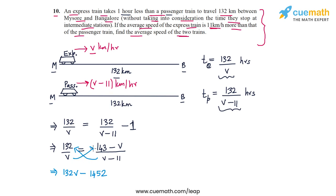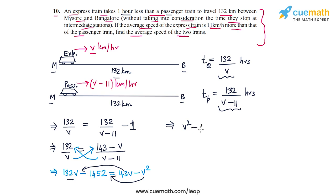Cross-multiplying v with (143 minus v) gives 143v minus v². Rearranging the terms, bringing minus v² to the left gives v², and combining 132v minus 143v gives minus 11v, leaving us with: v² minus 11v minus 1452 equals 0. This is the quadratic equation in v that we now need to solve.